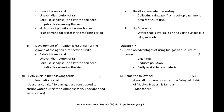Briefly explain the following terms: Inundation canal — seasonal canals where no barrages are constructed to ensure water during the summer season; they are flood water canals. Rooftop rainwater harvesting — collecting rainwater from a rooftop catchment area for future use. Surface water — water available on the earth's surface like lakes and rivers.